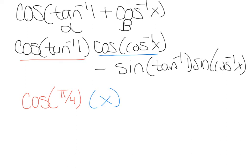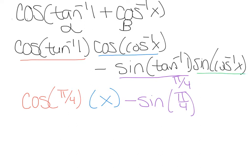This next piece right here: arctan equals 1 at π/4, so we really just have minus sine of π/4, and then I'm going to have to keep this last piece the way it is and deal with it in a second — so I have sine of arccos of x.